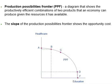The production possibilities frontier is a diagram that shows the productively efficient combinations of two products that an economy can produce given the resources it has available for producing those two products. The slope of the production possibilities frontier shows the opportunity cost. Opportunity cost is the value of the next best alternative.